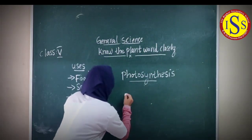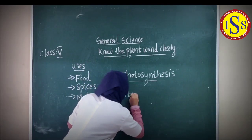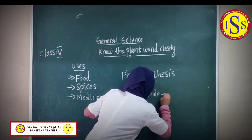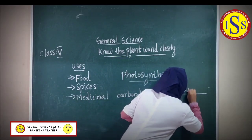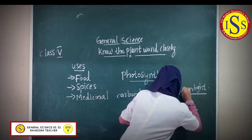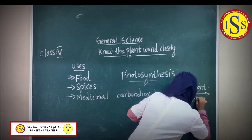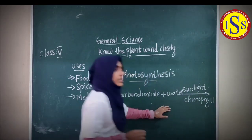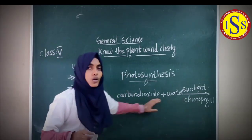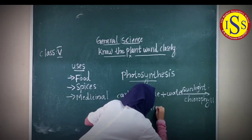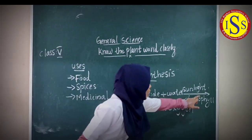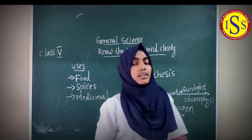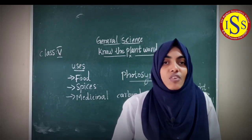Now look at the board. In photosynthesis, plants absorb carbon dioxide and water in the presence of sunlight and chlorophyll. The products of this process are glucose and oxygen. The glucose is later converted into starch, which is stored in all the parts of the plant.